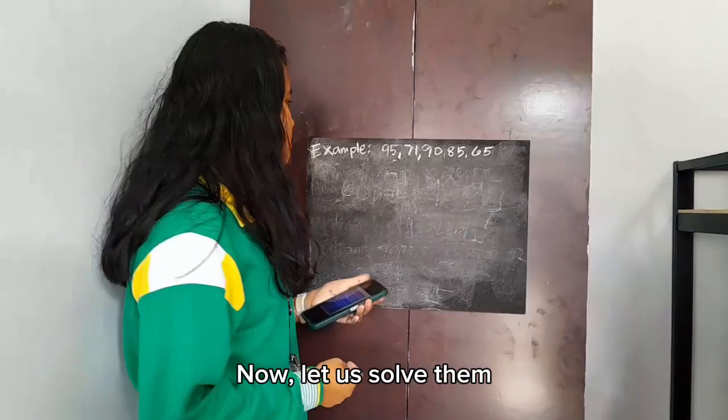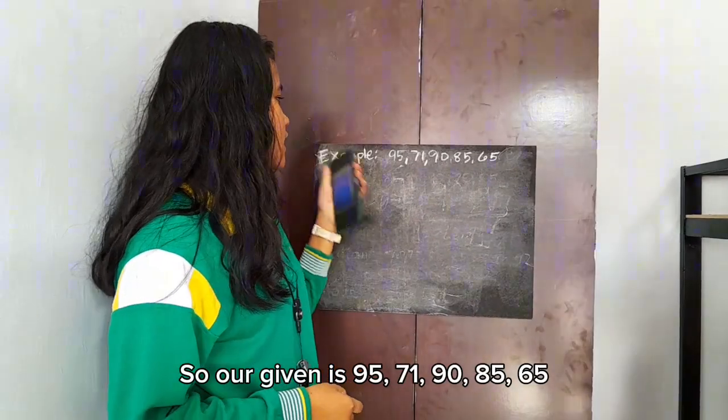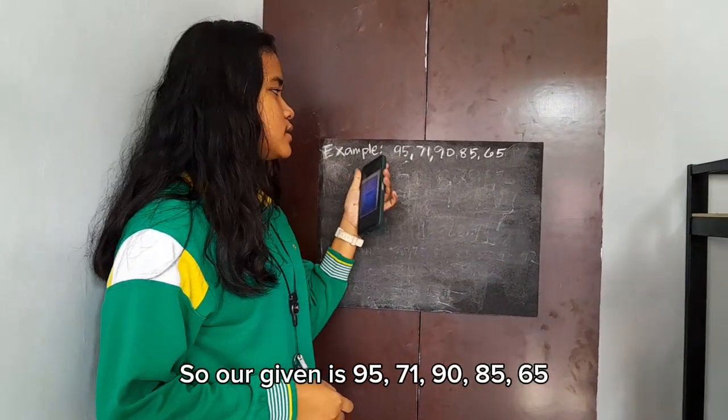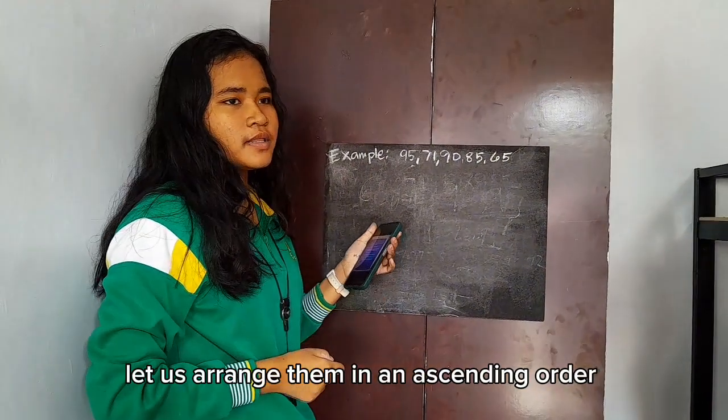Now let us solve them using the range formula. So our given is 95, 71, 90, 85, and 65. Let us arrange them in ascending order.